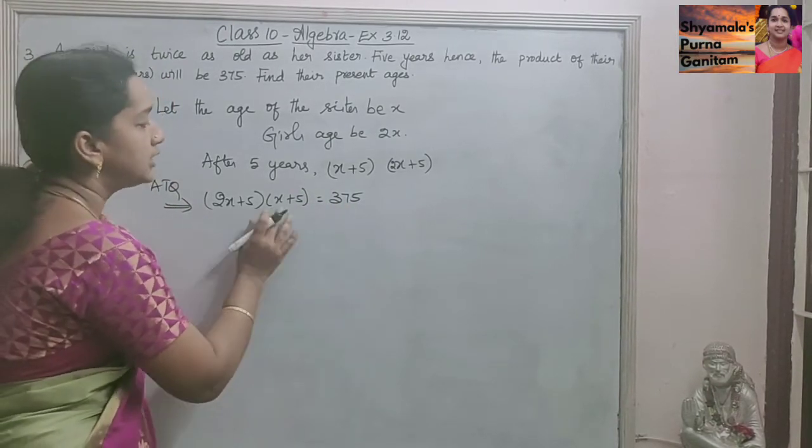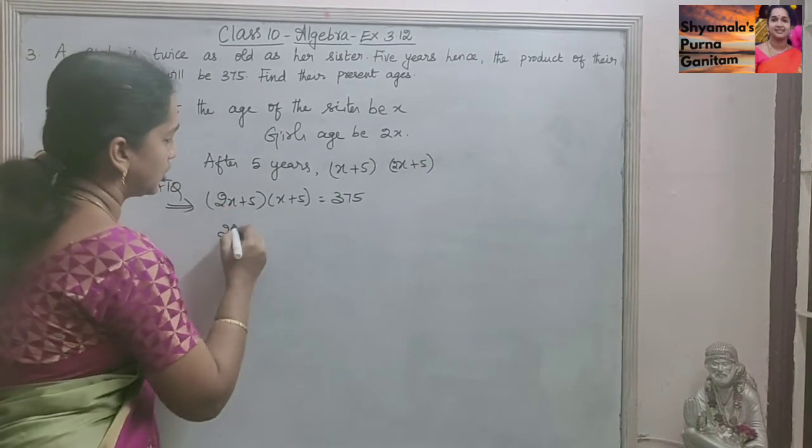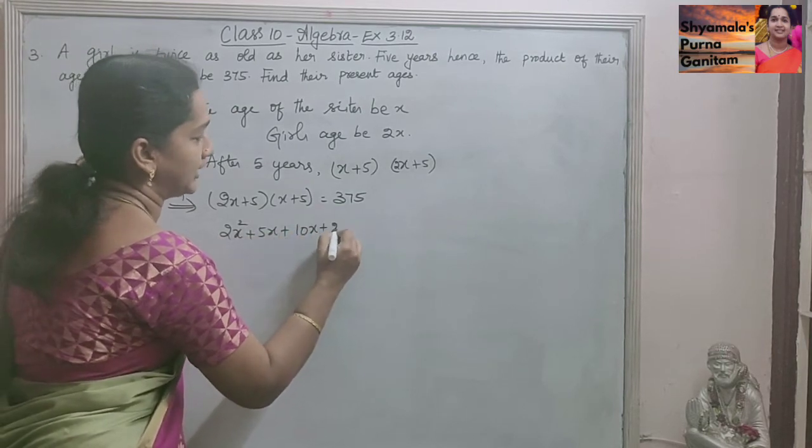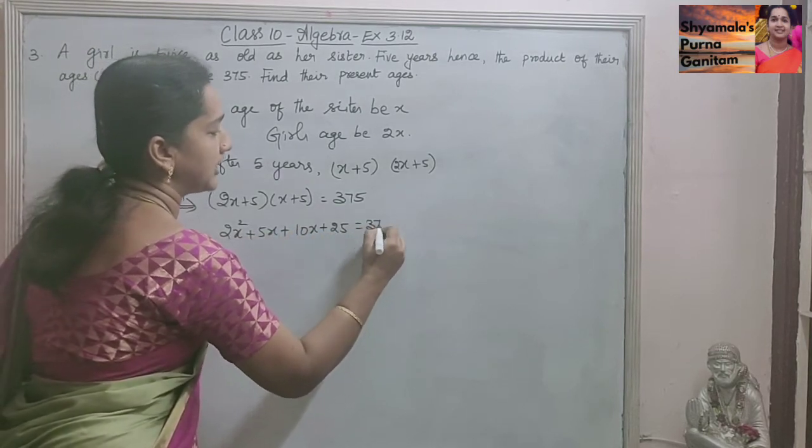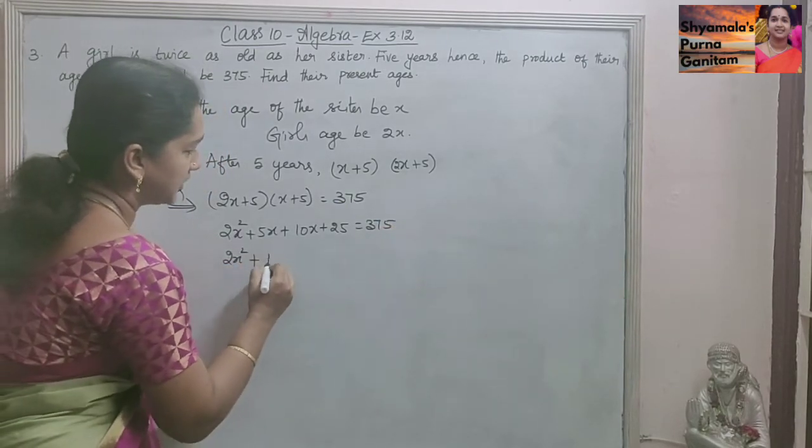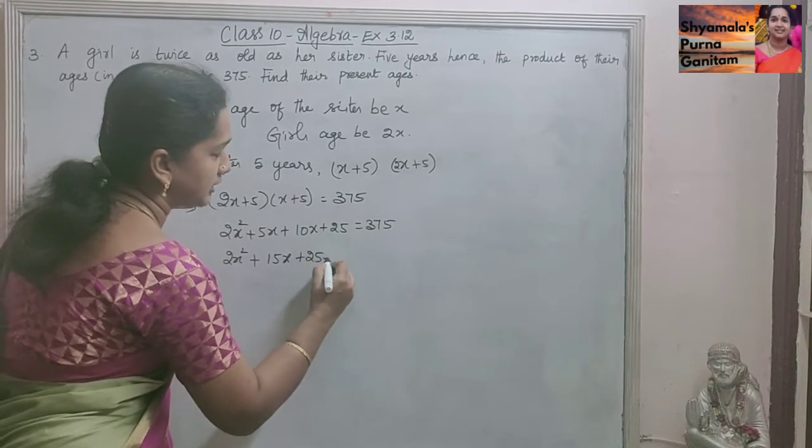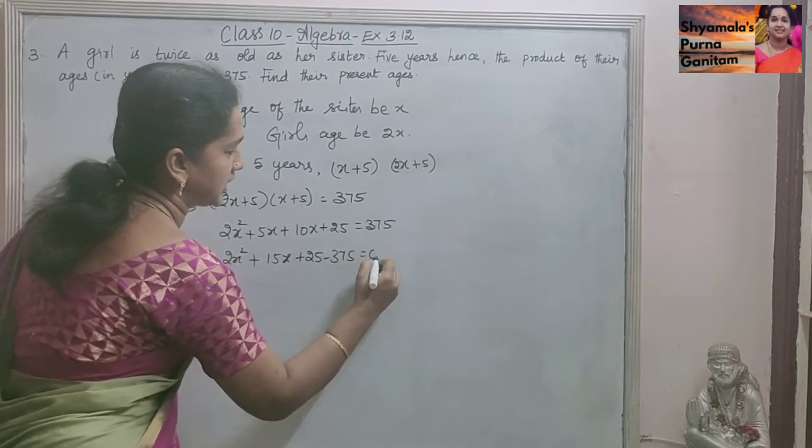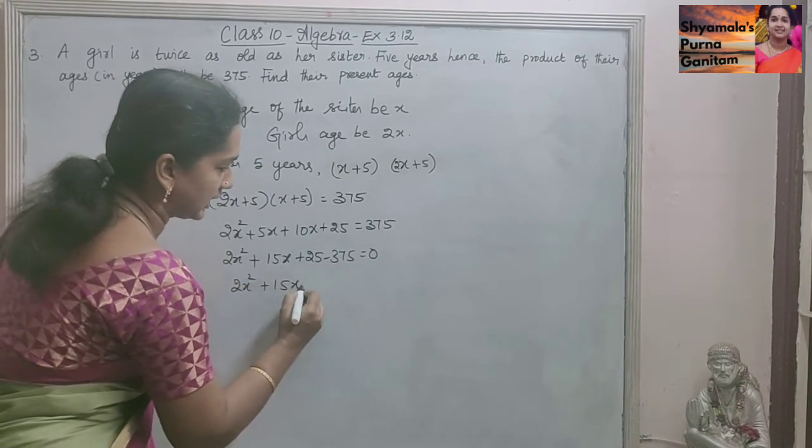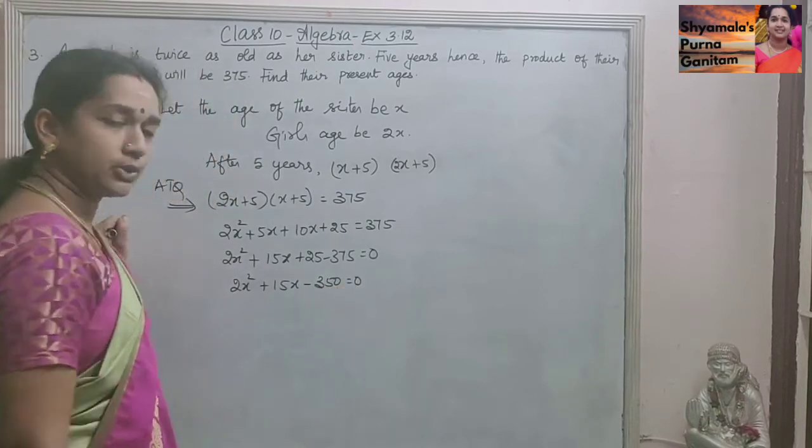So now we will cross multiply this. We will get a quadratic equation here. So 2X squared plus 5X plus 10X plus 25 is equal to 375. So 2X squared plus 15X. We will bring this 375 to this side. So 2X squared plus 15X minus 350 is equal to 0.